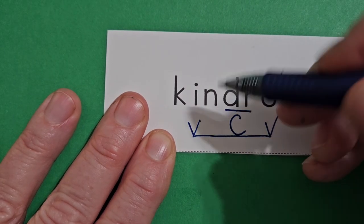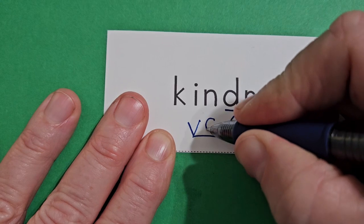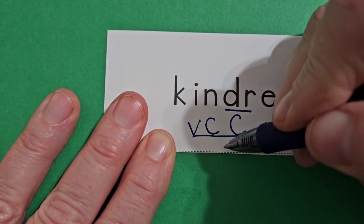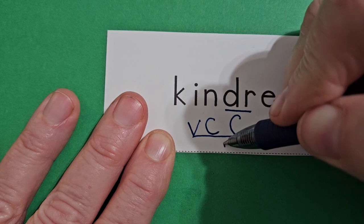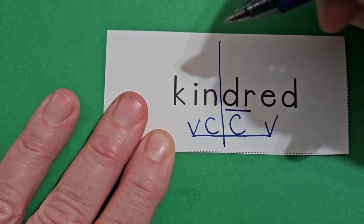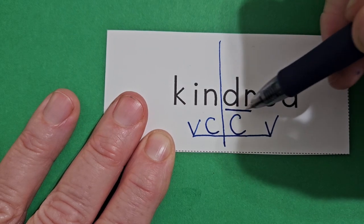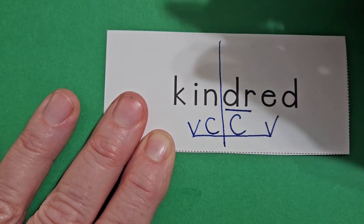And then now I can split my word. Starting from the bottom between the two C's, I draw my line up. Notice I'll never draw a line and cut between something that I've underlined.